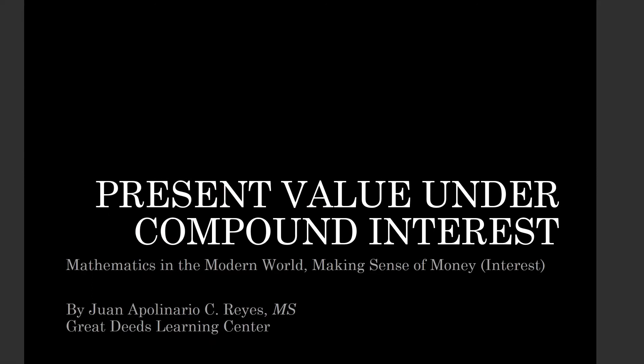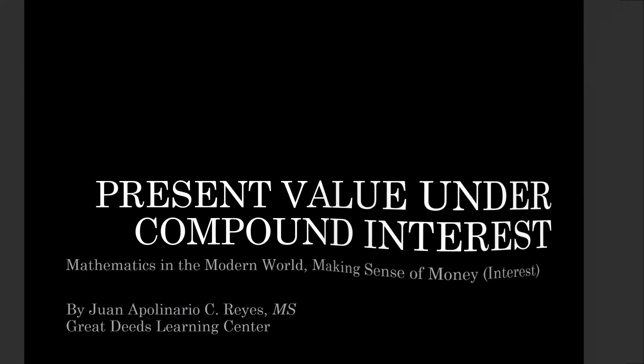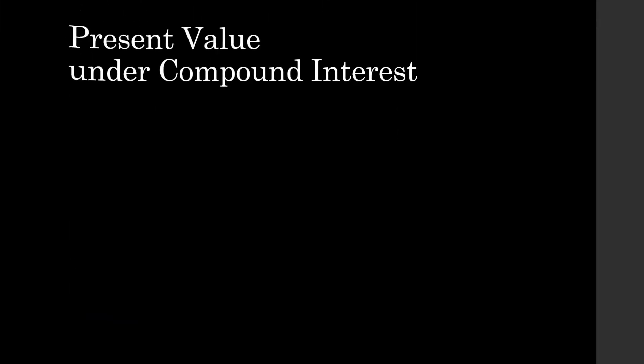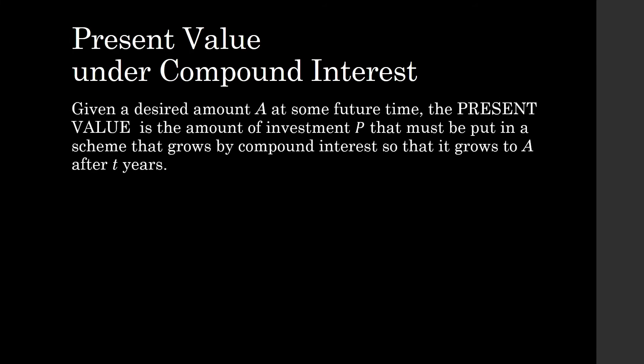Present Value Under Compound Interest. So what is the present value? What does it mean? Given a desired amount A at some future time, A is something that can be measured in terms of money. The present value is the amount of investment P that must be put in a scheme that grows by compound interest so that it grows to A after T years.